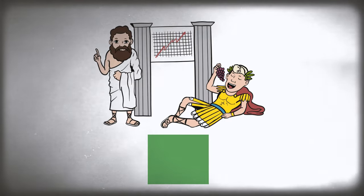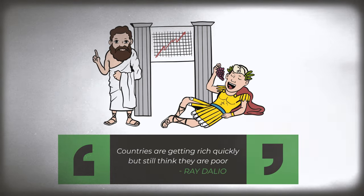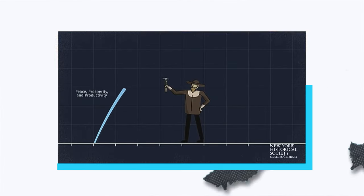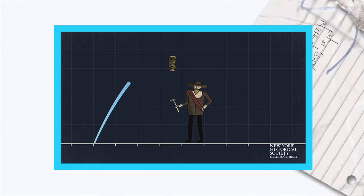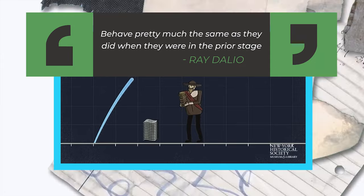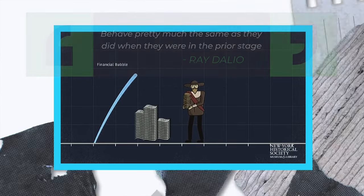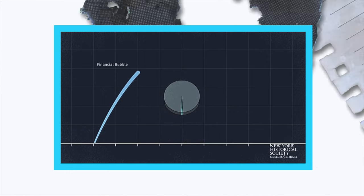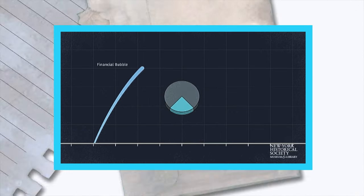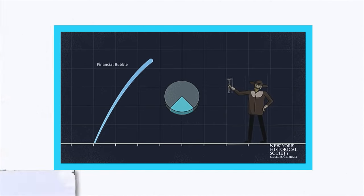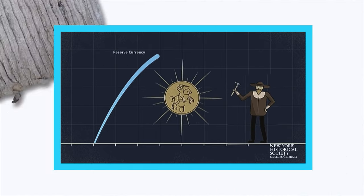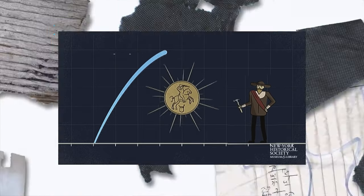In the second stage, countries are getting rich quickly but still think they're poor. This stage is similar to the growth stage in a successful company's life cycle. Despite the growth, the people tend to behave pretty much the same as they did when they were in the prior stage. But because they have more money and still want to save, the amount of saving and investment rises rapidly. They still work hard, save a lot, and invest efficiently in their means of production, in real assets.